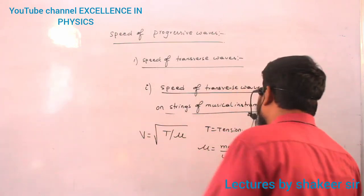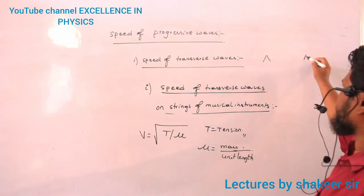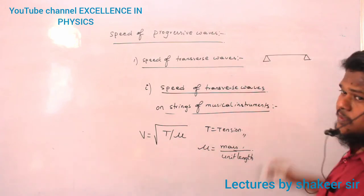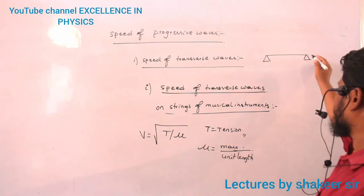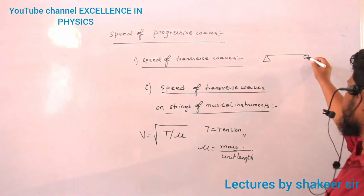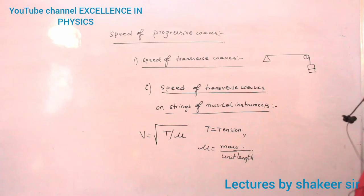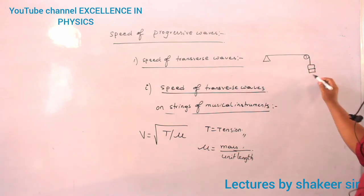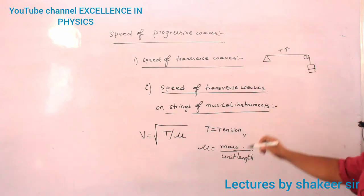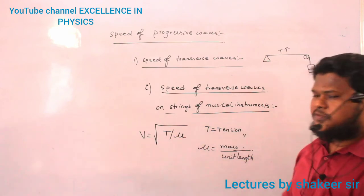In tuning of musical instruments, there are two supports with strings stretched between them. If I increase the mass attached to this wire, tension increases. If tension increases, the velocity of the transverse wave also increases.